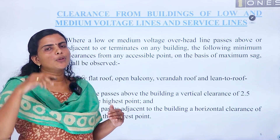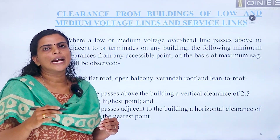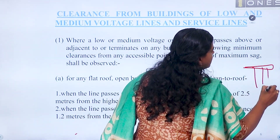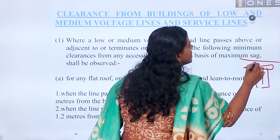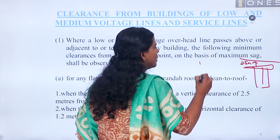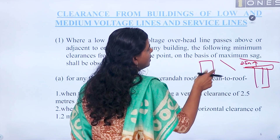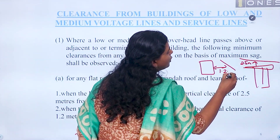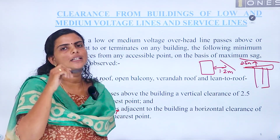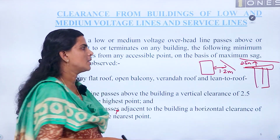With respect to buildings — we have a line near the roof. From the roof to the lowest conductor, the height should be at least 2.5 meters. So if this is a building, above it should be at least 2.5 meters, and similarly on the adjacent side it should also be at least 2.5 meters. Above the roof to the lowest conductor is at least 2.5 meters, and along the building in the adjacent distance it should be at least 1.2 meters.